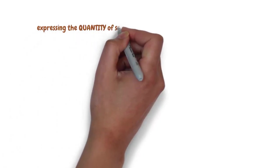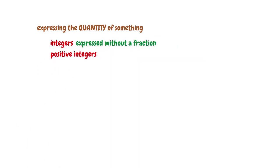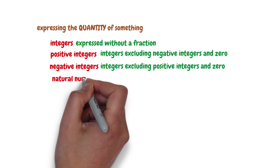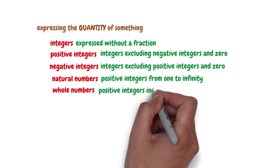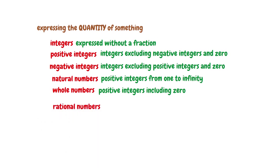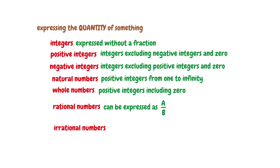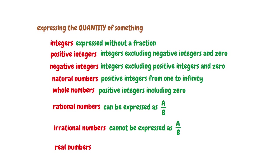To recap, numbers are a way of expressing the quantity of something. There are several sets of numbers: the integers, which are numbers expressed without a fraction; the positive integers, which are integers excluding negative integers and 0; the negative integers, which are integers excluding positive integers and 0; the natural numbers, which are positive integers from 1 to infinity; the whole numbers, which are positive integers including 0; the rational numbers, which are numbers that can be expressed as A over B; the irrational numbers, which are numbers that cannot be expressed as A over B; and finally, the real numbers, which are a set of all integers, rational and irrational numbers.